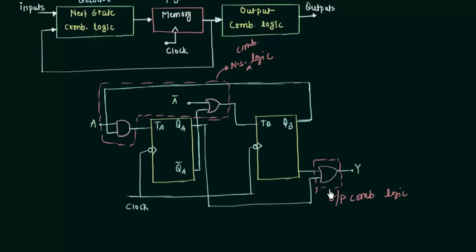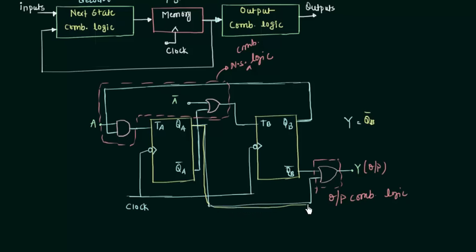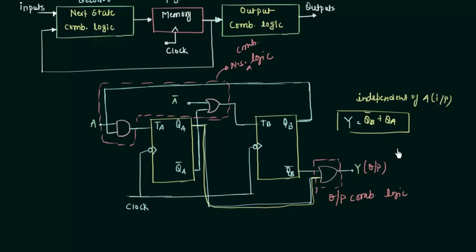Now we will try to find the value of Y and on what factors Y depends. There are two inputs to this OR gate, and Y is the output of this OR gate. The first input is QB complement, and the second input is QA. So Y equals QB complement OR QA. Notice there is no A in this expression — Y is independent of A, which is our input. So it is clearly a Moore model, or the Moore state machine. This is how you check whether a circuit is a Moore state machine or a Mealy state machine.